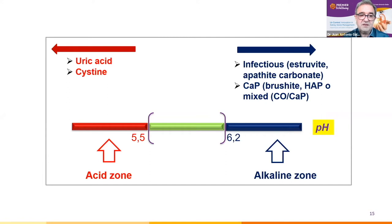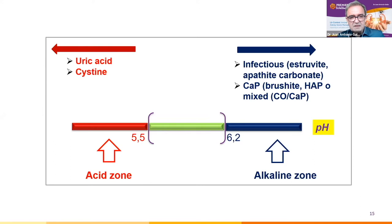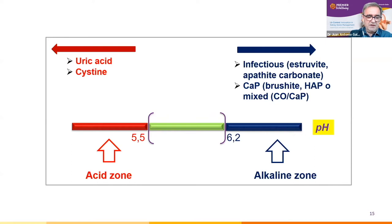Uric acid is a weak organic acid with a formation product at pH 5.5; at that pH and lower, uric acid crystallizes. Even with more than two liters of water intake a day, there will be uric acid precipitation if the concentration in urine exceeds 800 milligrams per day.